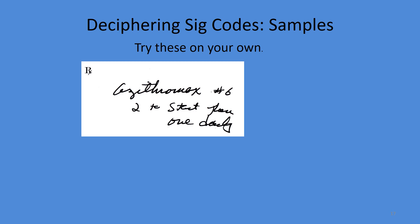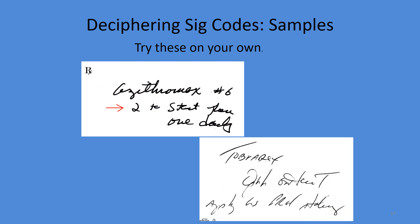Now try these on your own. First: azithromycin, dispensing six tablets — the sig starts here, give it a try. Second: Tobradex ophthalmic ointment — give this one a try as well. In part three we'll go over these, or you can put your answers in the comments and we'll see if you're correct.